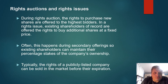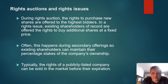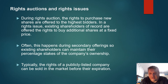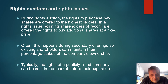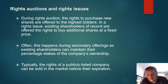Rights auctions and rights issues: during a rights auction, the rights to purchase new shares are offered to the highest bidders. A right is an option to buy something at a certain price — you buy the right, not the share directly. Once you buy a right, then you can buy the share. In a rights issue, existing shareholders of record are offered rights to buy additional shares at a fixed price. This often happens during secondary offerings, so existing shareholders can maintain their percentage stakes of ownership. The rights of a publicly listed company can be sold in the market before their expiration — if you don't exercise them to buy shares, you can sell them to others.